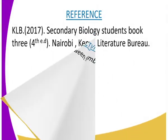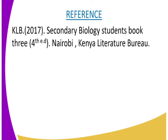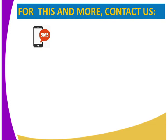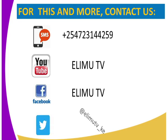We can have the following activity whereby you will be required to differentiate between symbiosis and saprophytism. To get more of this lesson, you can refer to KLB Secondary Biology Students Book 3, the fourth edition Nairobi, certified by the Kenya Literature Bureau. You can also send us an SMS through the number appearing on our screen, or through our YouTube channel Elimutv, or subscribe to our Facebook page Elimutv, or tweet us at Elimutv underscore Kenya. Subscribe to all these channels so that we might enjoy more of our biology lessons.